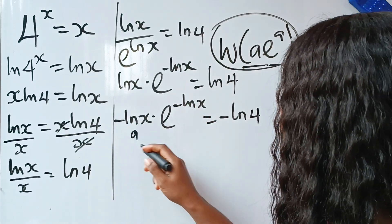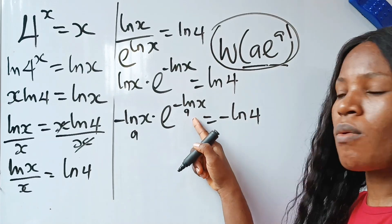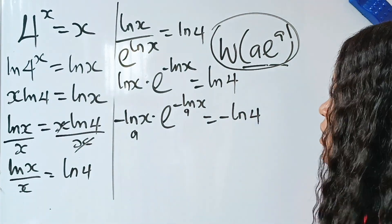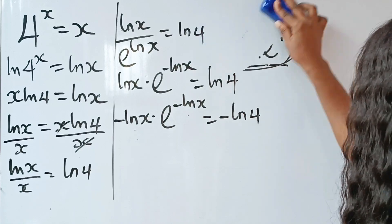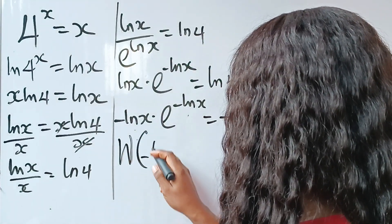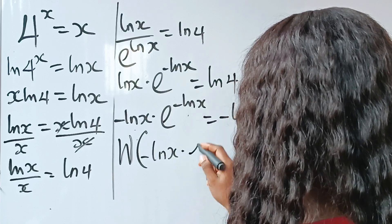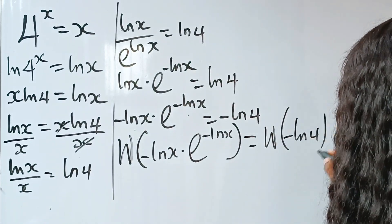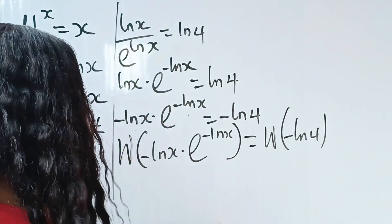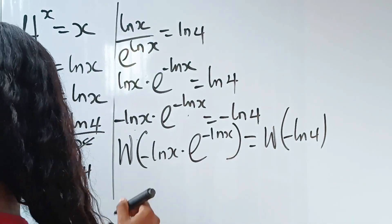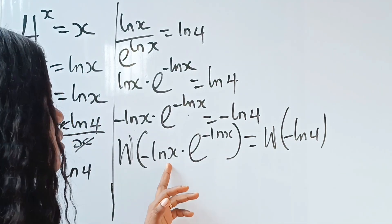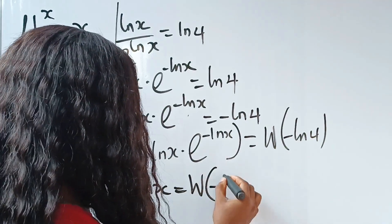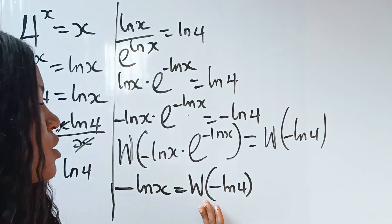If we call −ln(x) our 'a', then we have a·e^a on the left side. We can now comfortably apply the Lambert W function. Applying W to both sides: W(−ln(x)·e^(−ln x)) = W(−ln 4), which gives us −ln(x) = W(−ln 4).